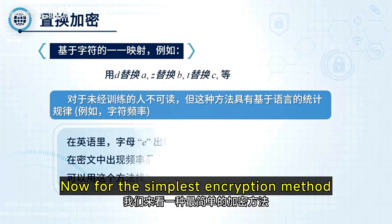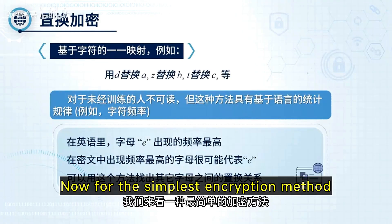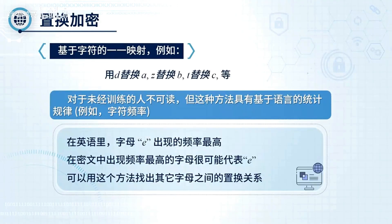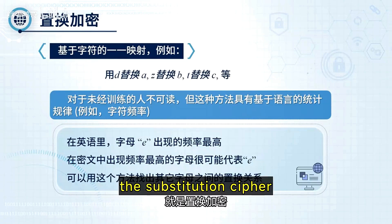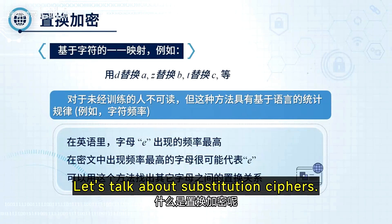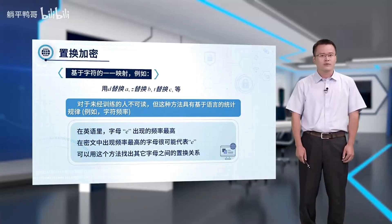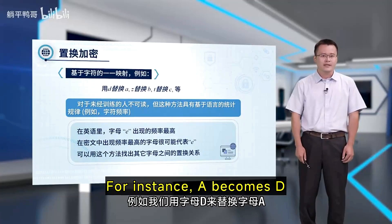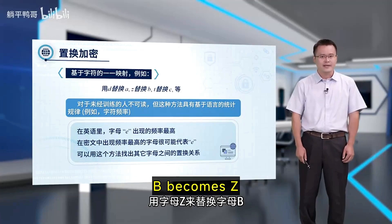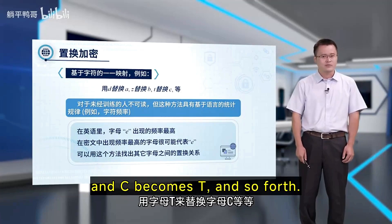Now for the simplest encryption method: the substitution cipher. It works by replacing each letter with a different one. For instance, A becomes D, B becomes C, and C becomes T, and so forth.